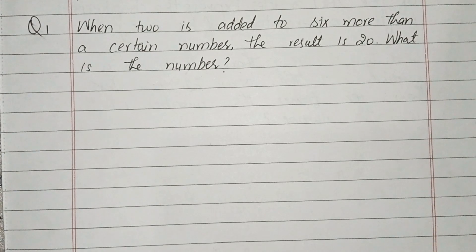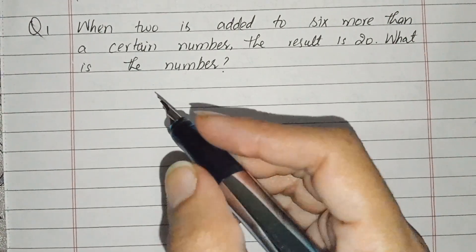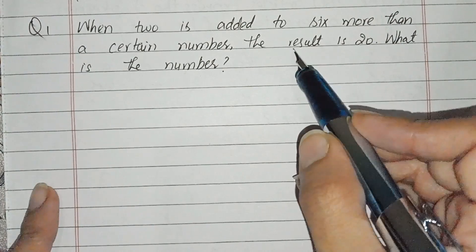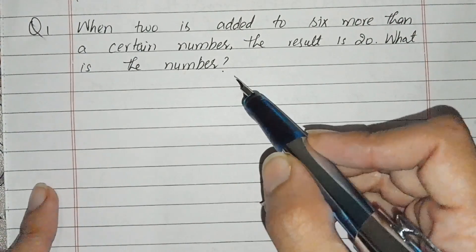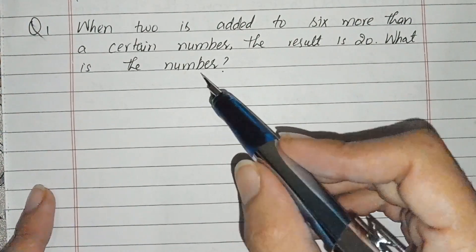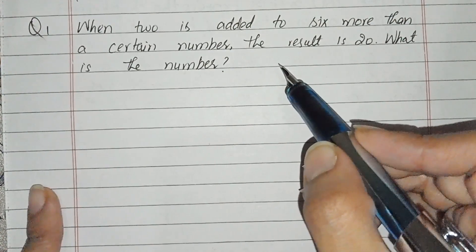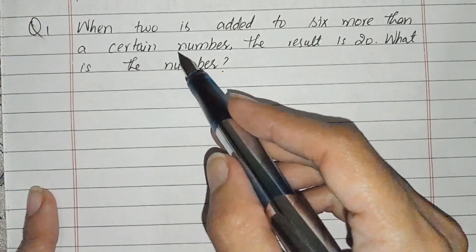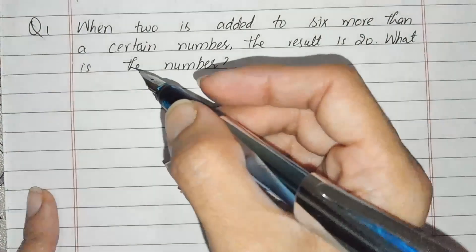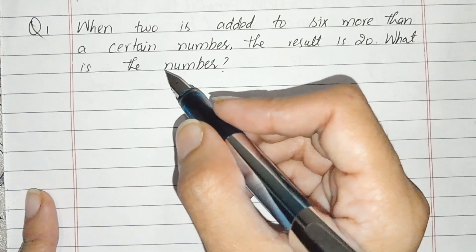Question number 1: When 2 is added to 6 more than a certain number, the result is 20. What is the number? We have a situation where we have to add 2 to 6 more than a number, and our result is 20. We have to find out the number. We have to solve these questions as linear equations.